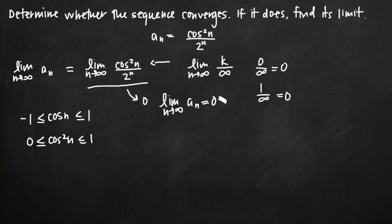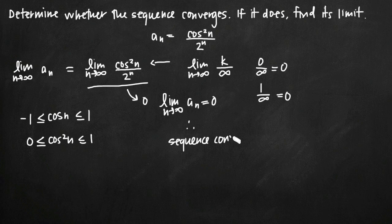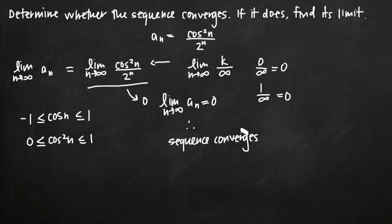This tells us that the limit exists and that the limit is 0. Because the limit exists and equals 0, we automatically know that the sequence converges. Notice that instead of following the instructions in the order given, we first found the limit, proved that it was equal to 0, found that it existed, and because it existed, we know by the definition of convergence for a sequence that the sequence does in fact converge. So you can just find it that way.